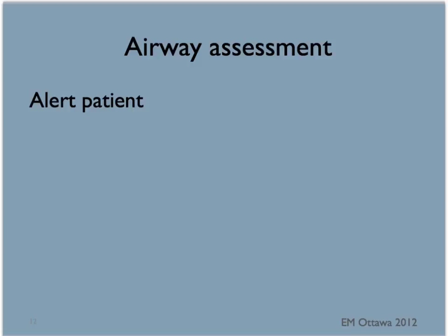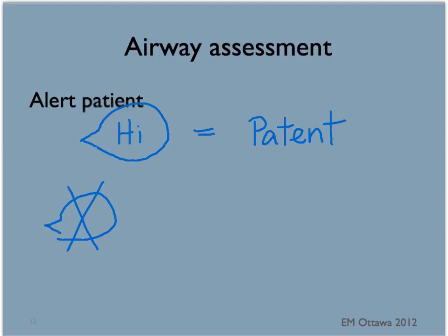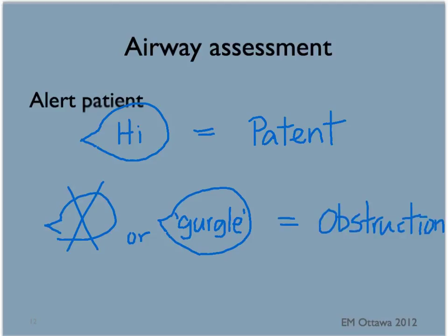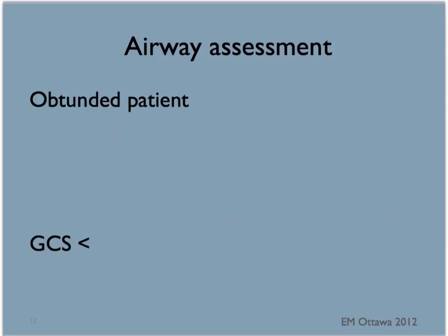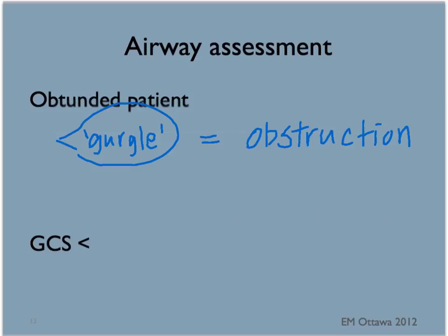How do we assess for airway patency? We listen and watch. In an alert patient, if they are able to talk to you, they have a patent airway. If the patient cannot speak or is only making gurgling noises, the airway is obstructed. In an obtunded patient making respiratory efforts, noisy breathing indicates obstruction. If the patient is not making any respiratory effort, we presume they have lost muscular tone to keep the airway patent. As a general rule, a Glasgow Coma Scale of less than 8 usually signifies the need for airway intervention.